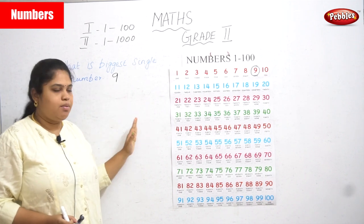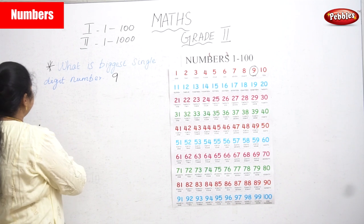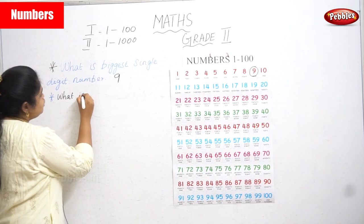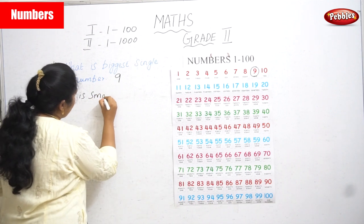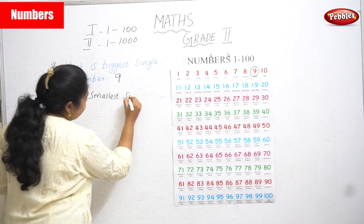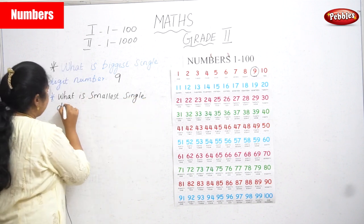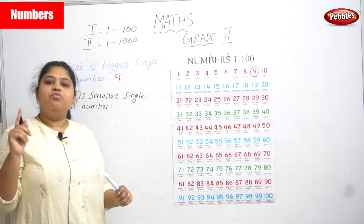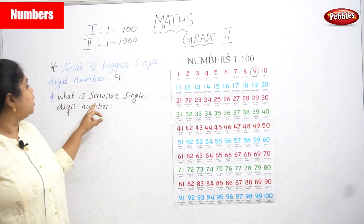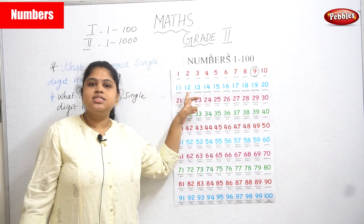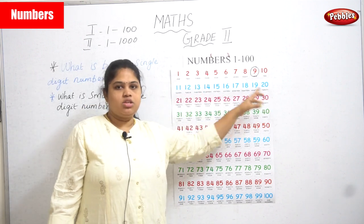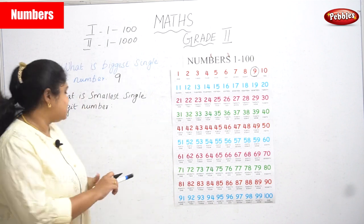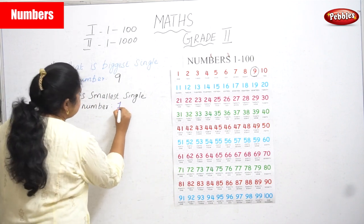Now the second question: what is the smallest single digit number? A single digit number means only one digit. We have single digits from 1 to 9. So 9 is the biggest single digit number, whereas 1 is the smallest single digit number.